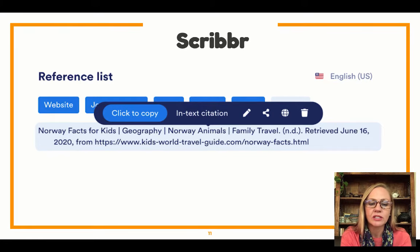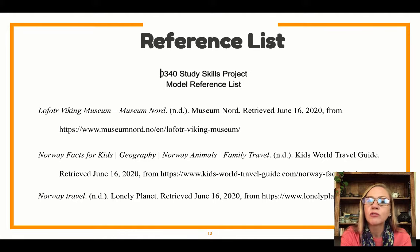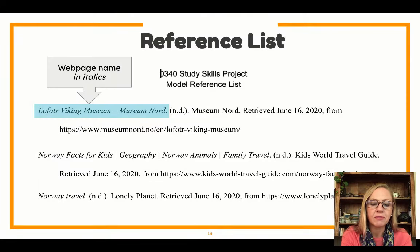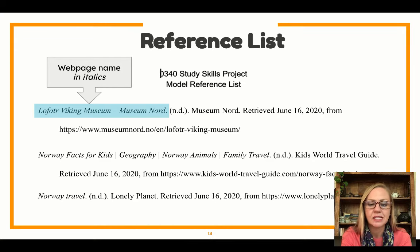Here's what my reference list looks like when it's done. You can see there are three different sources here. I'm going to show you all the parts so you know what to look for. You can check and make sure your references are done correctly. The website should do it right, but you need to check for mistakes. So first we've got the web page name in italics — that means the letters are kind of off to the side like that. For example: 'Lofotor Viking Museum, Museum Nord,' then a period, a space, parentheses.